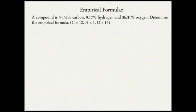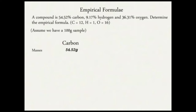Let's say you have a compound that is 54.52% carbon, 9.17% hydrogen, and 36.31% oxygen. We need to determine the empirical formula. The first step is to assume that you have a 100-gram sample. Because percentage means out of a hundred, the respective percentage reflects the same mass — so 54.52 grams will be carbon, 9.17 grams is hydrogen, and 36.31 grams is oxygen.